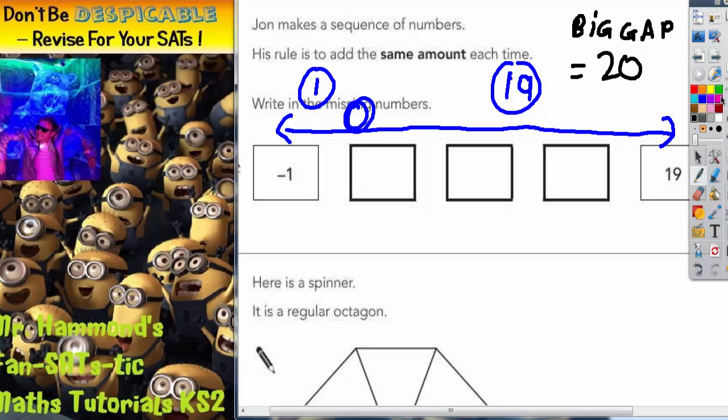But what else do we know? Well, we also know that we're not doing this just in one jump. We do a series of jumps. So the question is, how many jumps is there? Well, if there's 5 boxes, it might look as though there's 5 jumps.